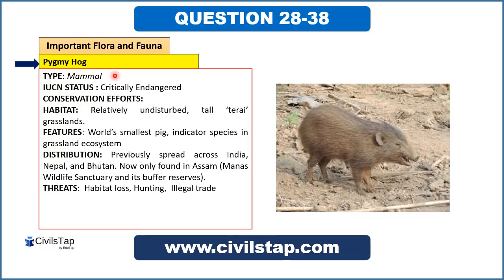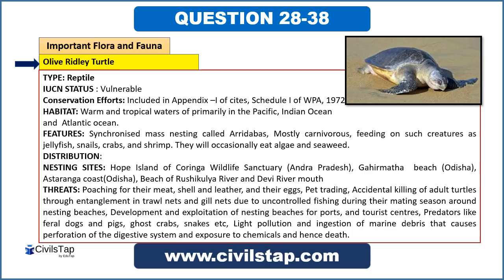The olive ridley turtle is notable for mass nesting behavior. It is mainly carnivorous, feeding on small creatures like jellyfish, snails, crabs, and shrimp. Its main distribution in India is the Rushikulia river and Devi river, which are the main nesting sites. It is classified as vulnerable by IUCN and is also included in CITES Appendix 1 and Schedule 1 of WPA.